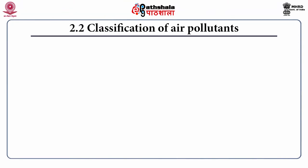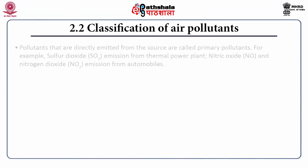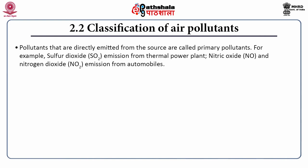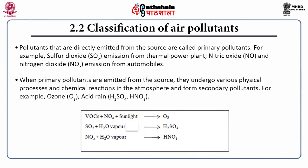Pollutants that are directly emitted from the source are called primary pollutants. One classification is primary and secondary. Examples of primary pollutants are sulfur dioxide emitted from thermal power plants, and nitric oxide and nitrogen dioxide emissions from automobiles. When primary pollutants are emitted from the source, they undergo various physical processes and chemical reactions in the atmosphere and form secondary pollutants — for example, ozone, H₂SO₄ and HNO₃ forming acid rain.